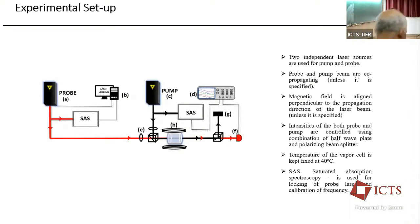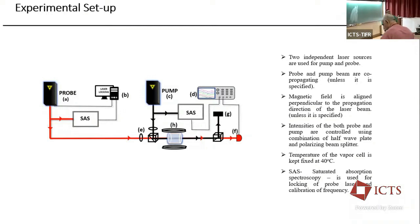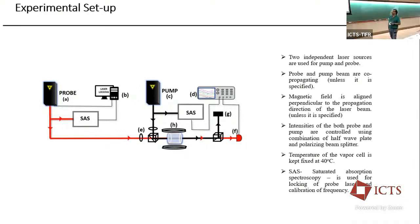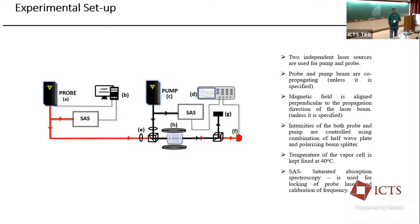This is my experimental setup. I am using two independent lasers — pump and probe — which unless specified are co-propagating, and the magnetic field is aligned perpendicular to the laser propagation direction, i.e., in the transverse direction. Intensity of both probe and pump are controlled using wave plates and PBS, which is standard procedure. The entire experiment was performed at room temperature with the vapor cell fixed at 40 degrees centigrade. For laser locking, one laser scans and one is locked using saturated absorption spectroscopy.